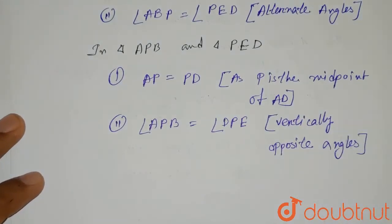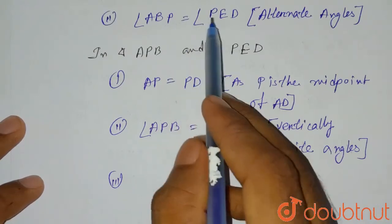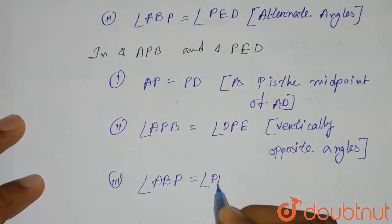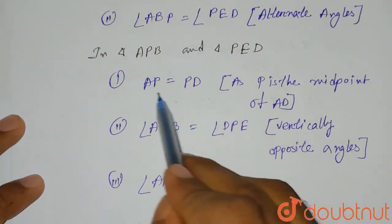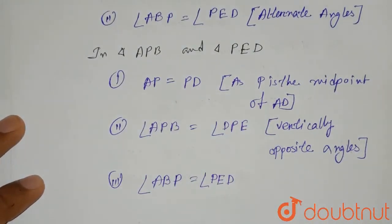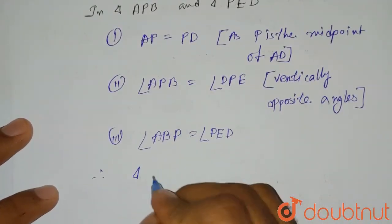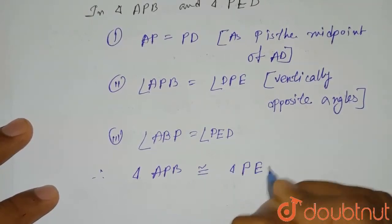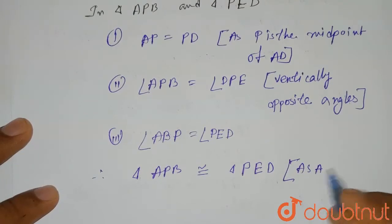Third thing, earlier we proved angle ABP is equal to angle PED. So in the triangle we can see that these two triangles are having a side equal, two of the angles are equal. That means according to ASA rule, they are congruent. So from here you can write that: therefore, triangle APB congruent to triangle PED by ASA, that means angle side angle rule.